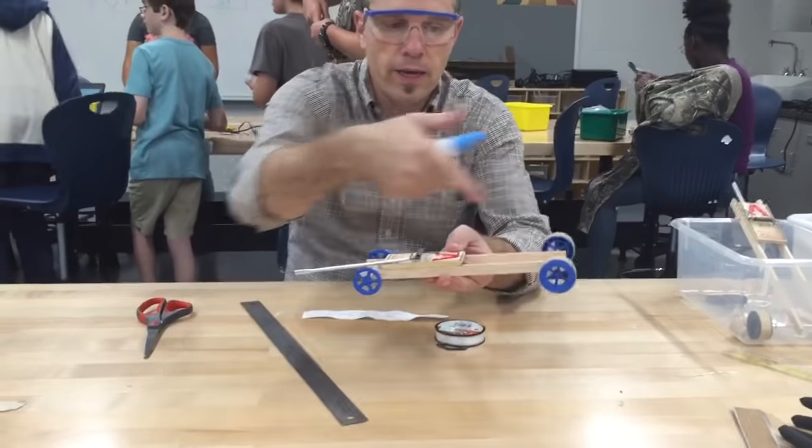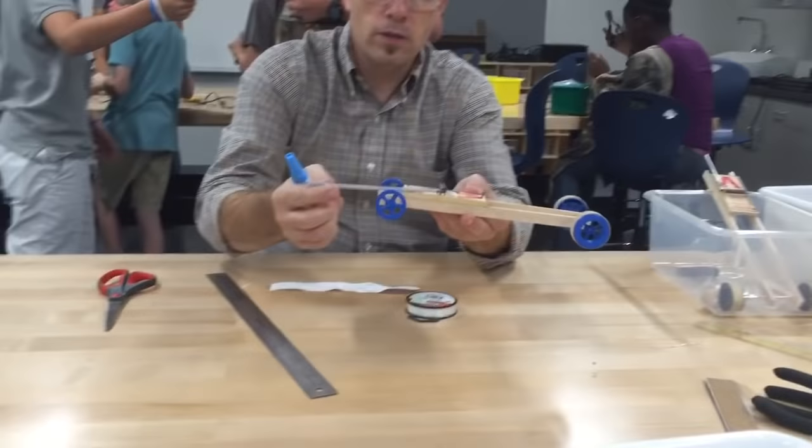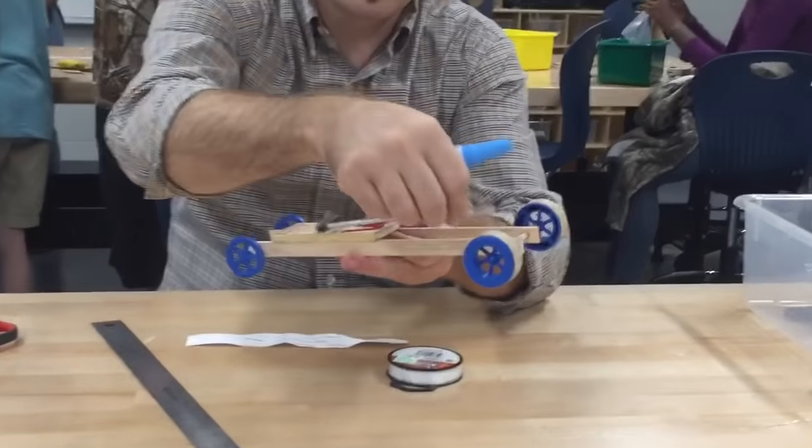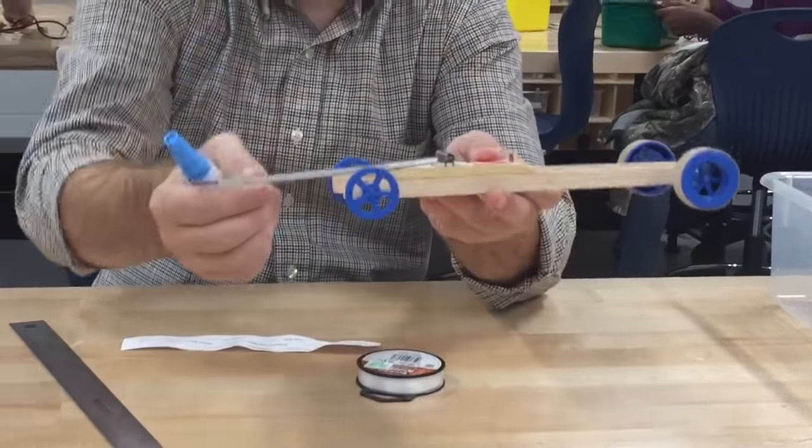We are going to get the string cut to length and attach it to our car. This is what's going to pull the axles and spin the axles around as the lever arm moves forward.